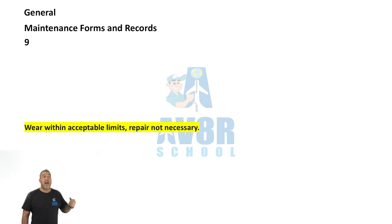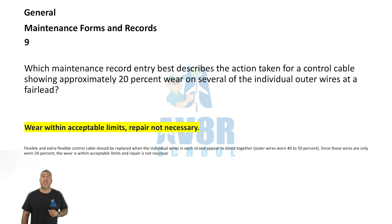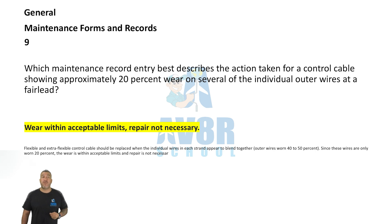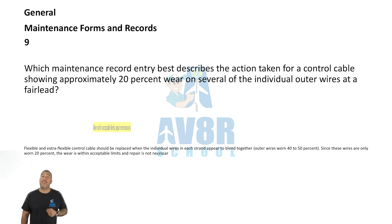Number nine: Which maintenance record best describes the action taken for a control cable that shows approximately 20% wear on several of the individual outer wires at a fairlead? The answer is: 'Wear within acceptable limits, repair not necessary.'